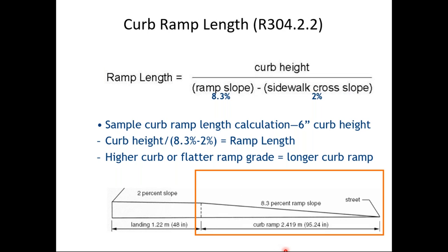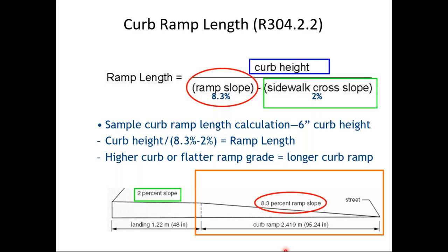Curb ramp length is calculated as: curb height divided by (ramp slope minus sidewalk cross slope). For a six-inch curb height, 8.3% ramp slope, and 2% sidewalk cross slope, that formula gives approximately 95 inches — almost 8 feet — for the ramp. Adding the four- to five-foot turning space at the top, from the back of sidewalk to street could be 12 to 13 feet, so curb ramps require quite a bit of space.